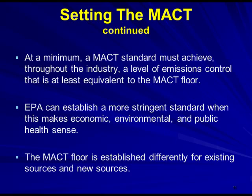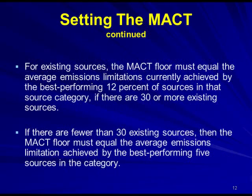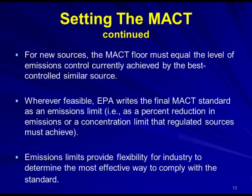The MACT floor is established differently for existing sources and new sources. For existing sources, the MACT floor must equal the average emission limitations currently achieved by the best-performing 12% of sources in that source category, if there are 30 or more existing sources. If there are fewer than 30 existing sources, the MACT floor must equal the average emission limitation achieved by the best-performing five sources. For new sources, the MACT floor must equal the level of emissions control achieved by the best-controlled similar source.